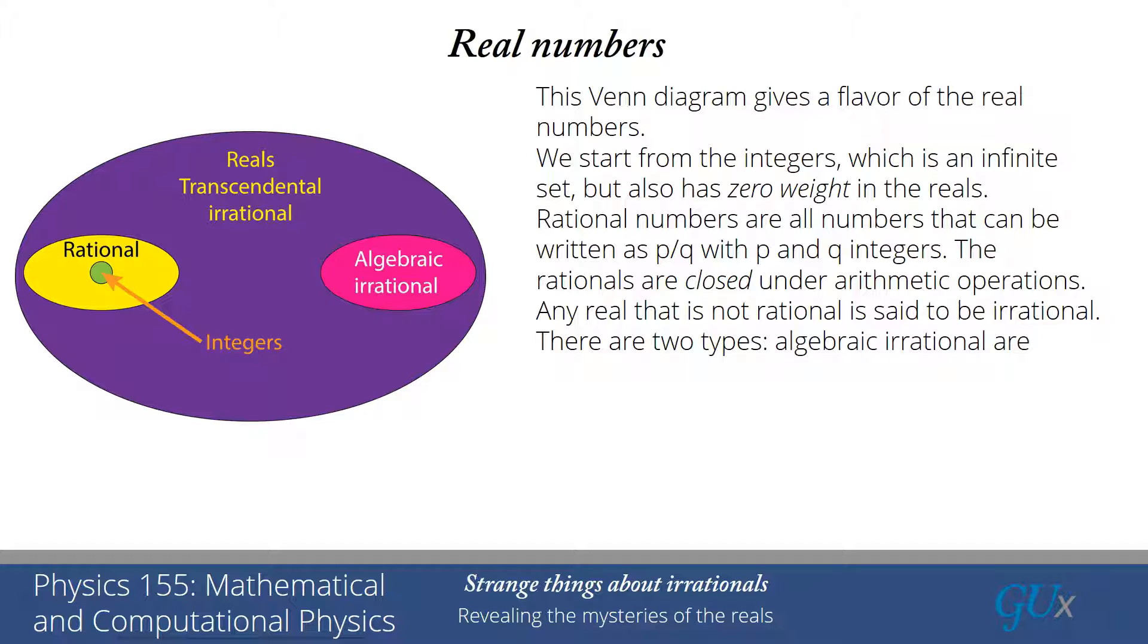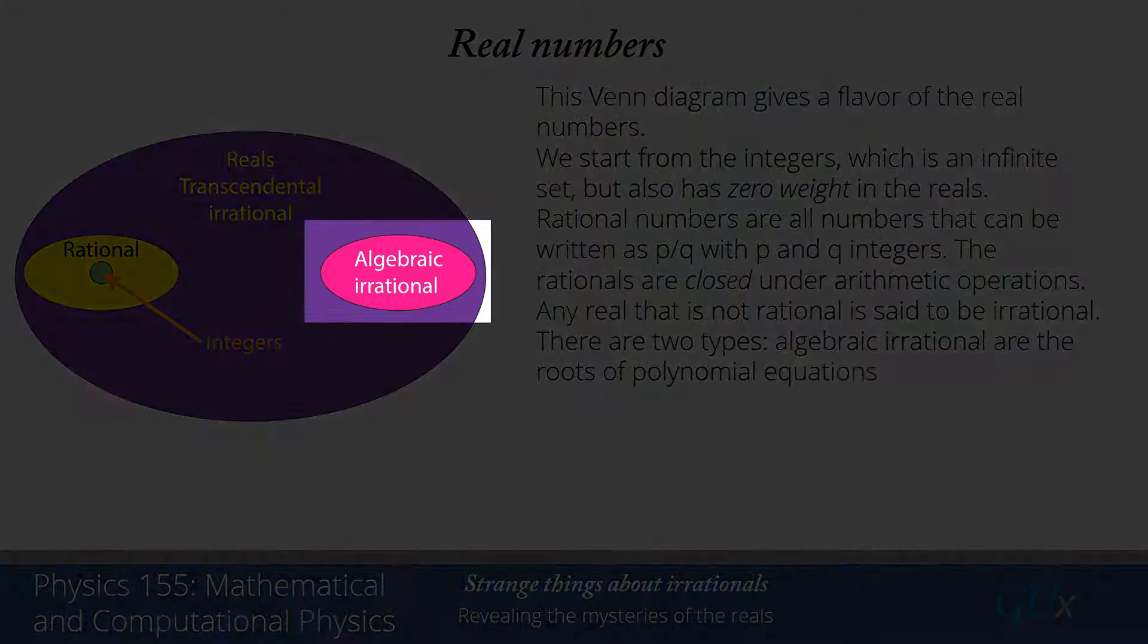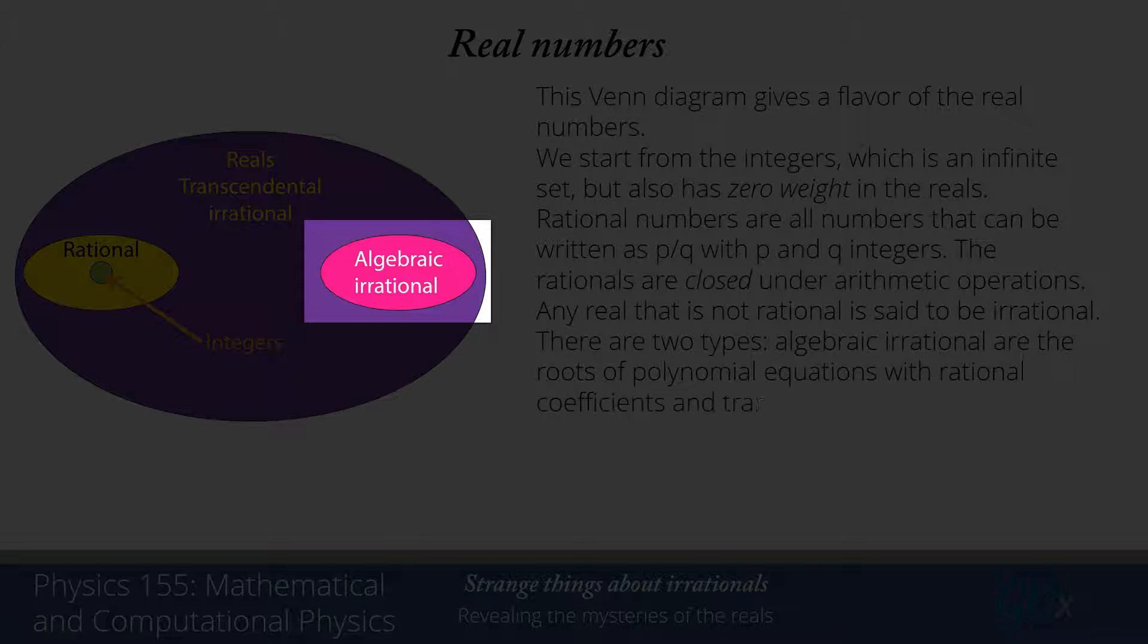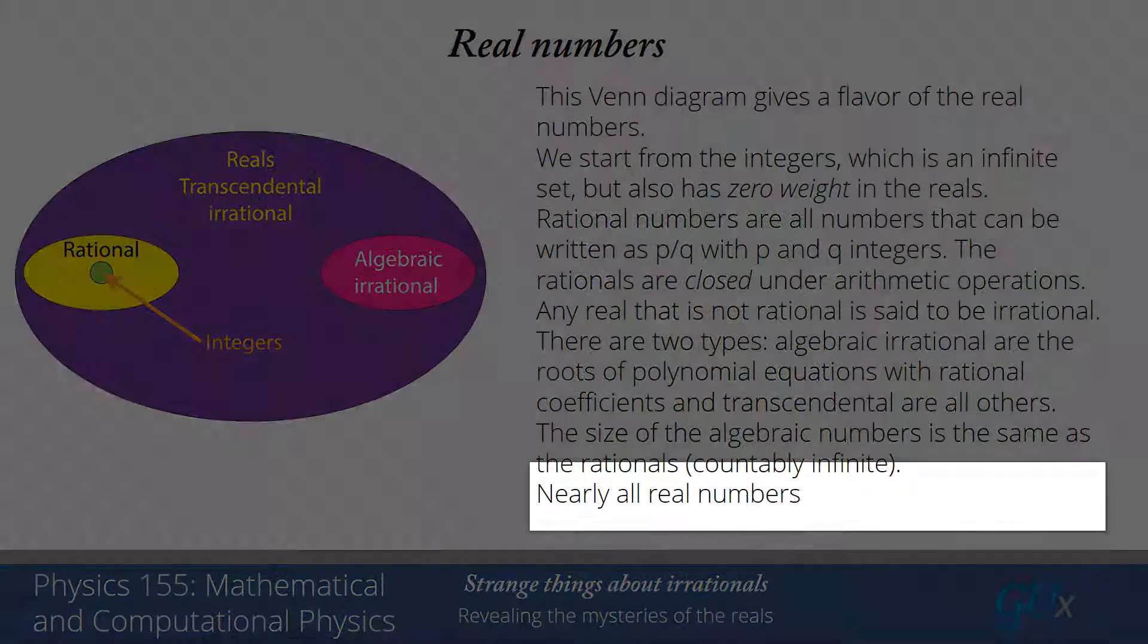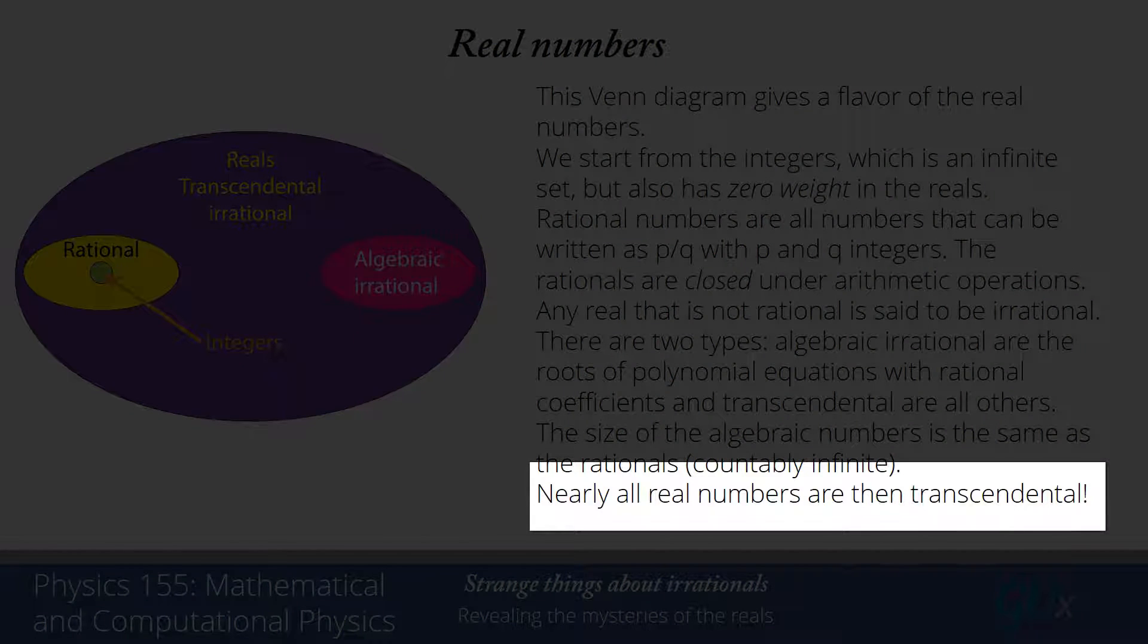There are two kinds of irrational numbers. The first kind are called algebraic irrational numbers, and they are the roots of polynomial equations with rational coefficients. The second are called transcendental, which is everything else. The algebraic irrational numbers come from polynomial equations with rational coefficients, so I can actually count all of the roots of those polynomial equations. The algebraic irrational numbers are actually countably infinite, so they have the same size as the rational numbers. But the reals are not countable, which means that nearly every real number must be a transcendental irrational number.